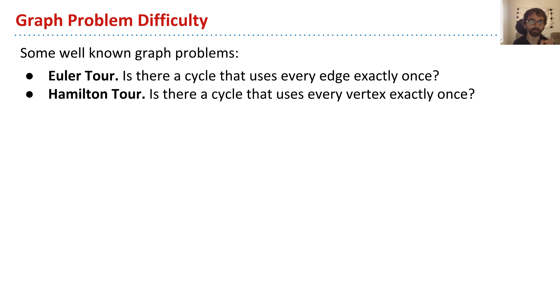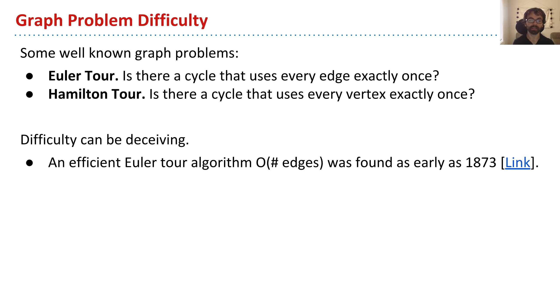It turns out that these two problems, even though they sound almost exactly the same, are vastly different in their difficulty. For example, an efficient Euler tour algorithm that has a runtime that is linear in the number of total edges, which is as good as you could possibly do, was found as early as somewhere around 1873.